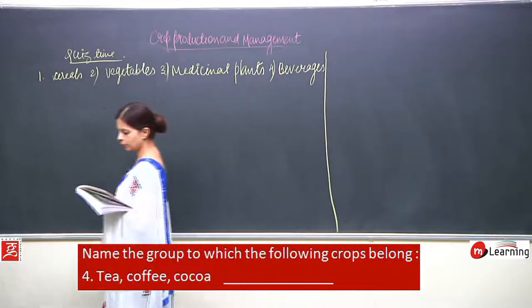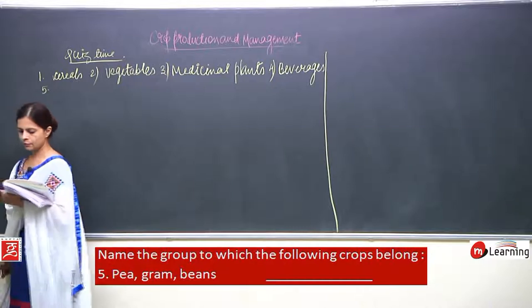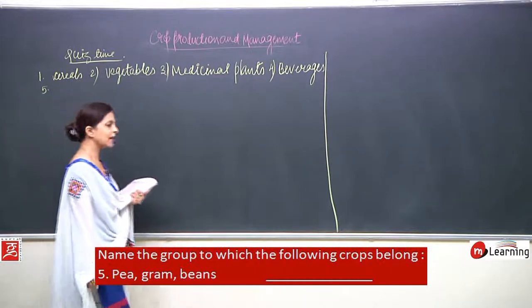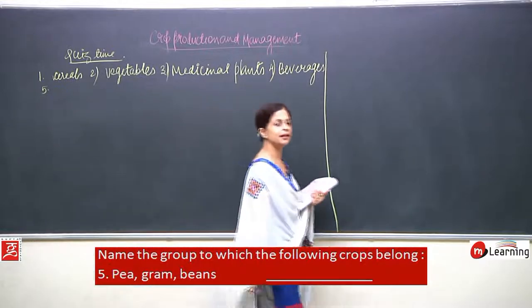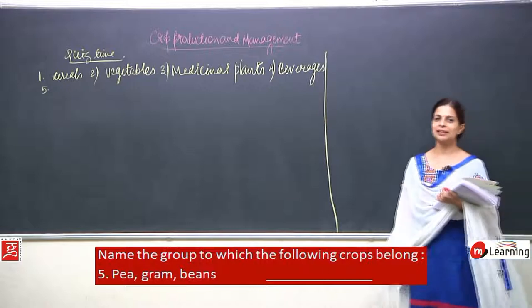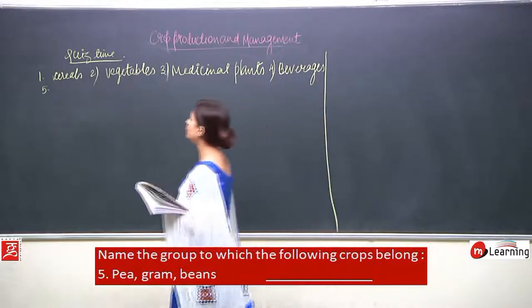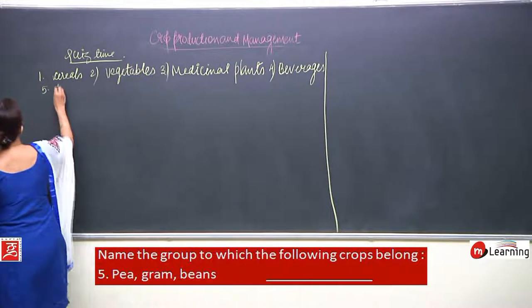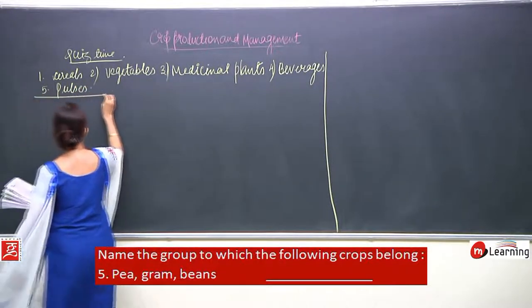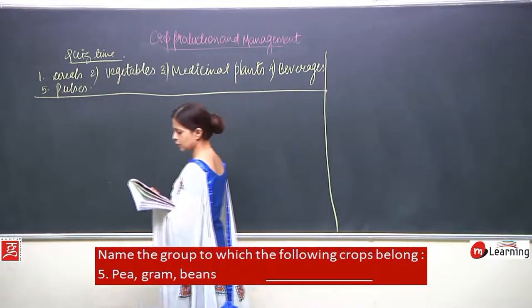Fifth one, the last one: pea, gram and beans. These are pulses.